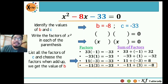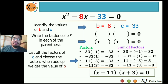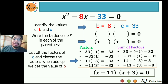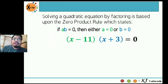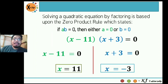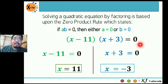Those are the factors to write inside the parentheses. So the two factors of x² - 8x - 33 = 0 are (x - 11) and (x + 3). Since we're solving quadratic equations, we need to solve for the roots by applying the zero product rule. Equating each factor to zero: x - 11 = 0, so x = 11. And x + 3 = 0, so x = negative 3.